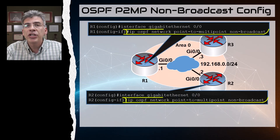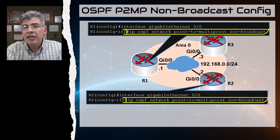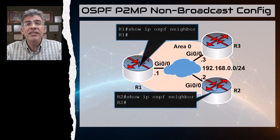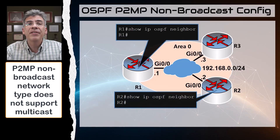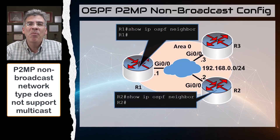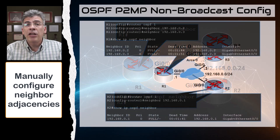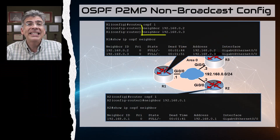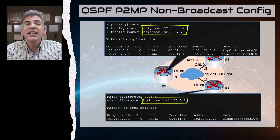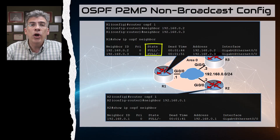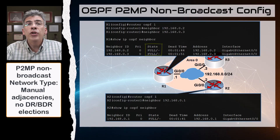Finally we come to the point-to-multipoint non-broadcast network type. This is used for topologies that are a collection of point-to-point links with a hub but that don't support multicast. As expected, we don't see any adjacencies — the non-broadcast nature means multicast is not supported, so no automatic neighbors are formed. We have to manually configure our neighbors. The behavior is the same as point-to-multipoint except that we manually configure neighbors. The result is that R1 has two neighbors and all router priorities are set to zero — so there is no DR/BDR election.